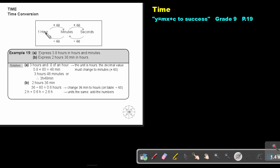If I want to go from hours to minutes, I must multiply with 60. From minutes to seconds, I must also multiply with 60. If I want to go back from seconds to minutes, I must divide by 60. And if I want to go from minutes to hours, I must also divide by 60.